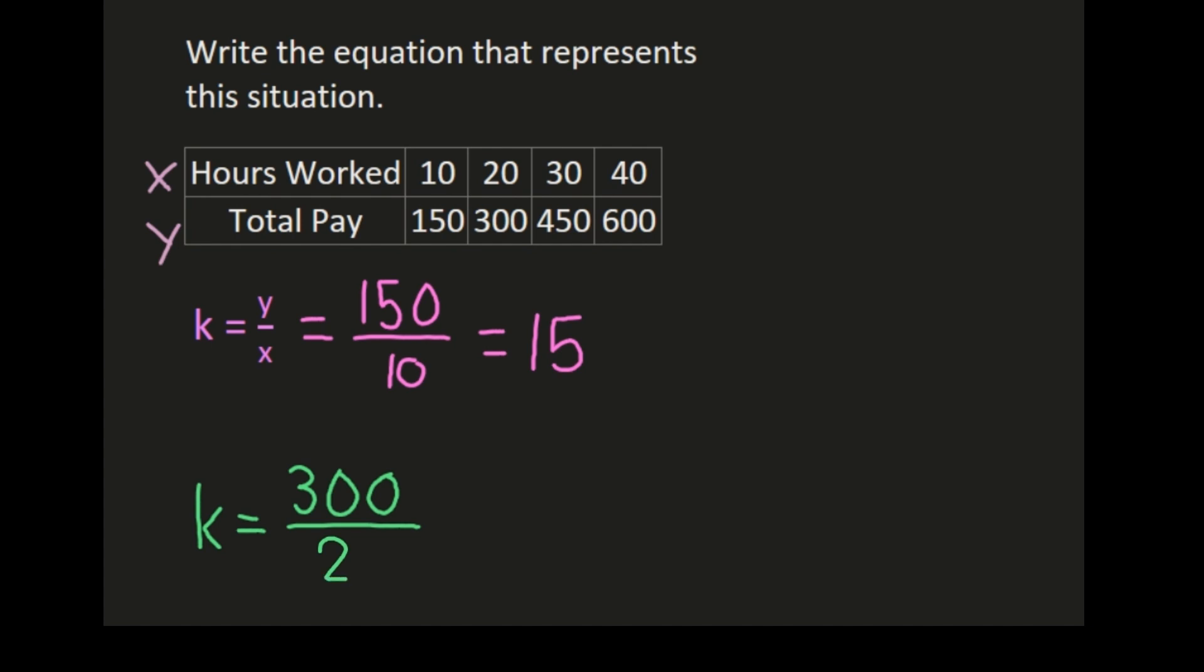Well first I can simplify by 10 which will give me 30 divided by 2, and 30 divided by 2 is 15.